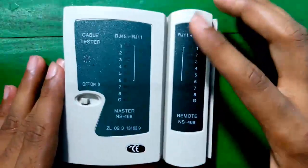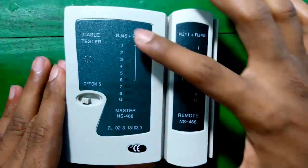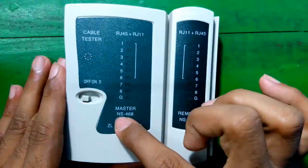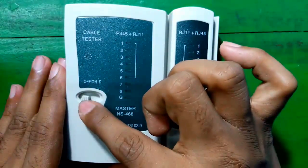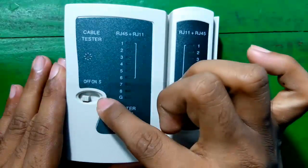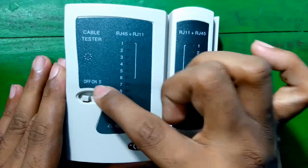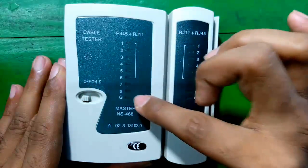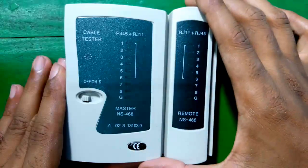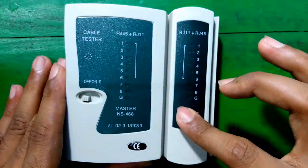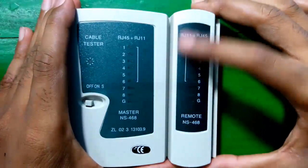So first let's start with the overview of this cable tester. The device is very commonly used in networking field. It has model number NS468. On the front, there is one switch which has three positions: off, on, and slow. There are total 9 LEDs, out of them 8 are operational. The device is divided in two parts. One is master and another is remote or slave. They can be easily detached.